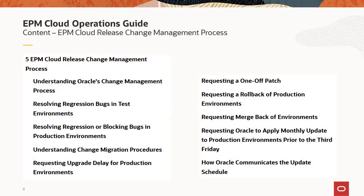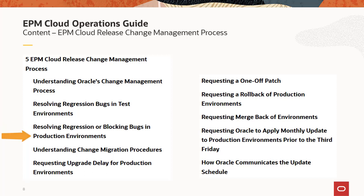The last part of the EPM Cloud Operations Guide is the EPM Cloud release change management process — the processes we use to keep your environments up to date and handle related requests. The first section explains Oracle's change management process: what is a monthly update, a weekly patch, a one-off patch, and an emergency patch — the four mechanisms through which we update your environments. We also explain how we resolve regression bugs found in test environments, and in rare cases where regression bugs reach production environments, how we resolve those.